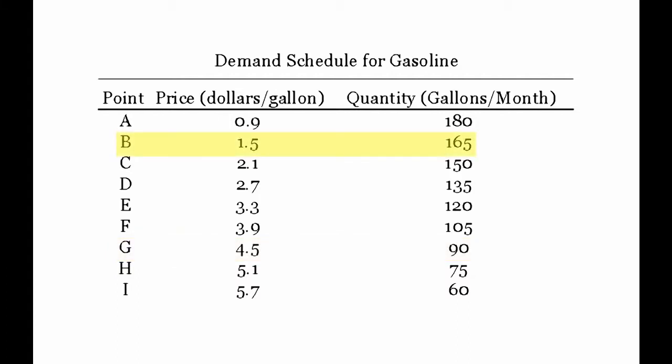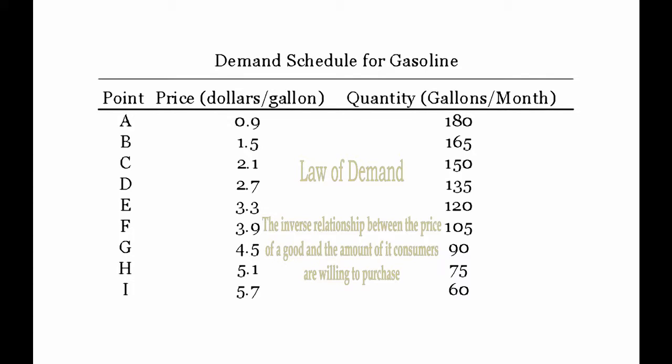If we choose a different point, say point B, we see a decrease in price from $4.50 per gallon to $1.50 per gallon. At $1.50 per gallon, gasoline takes up a comparably smaller portion of the budget, allowing this consumer the flexibility to drive more places. This is seen as an increase in consumption from 90 gallons per month to 165 gallons per month. As the price of fuel decreased, the consumer had the fortune to use more fuel. As the price increased, the consumer had to cut back and buy less fuel.